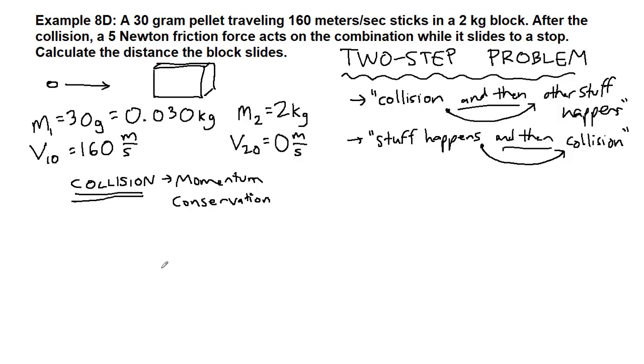But what we will find, and what I will show us on this example problem, is that it's going to be quicker and easier to use our newer chapter seven ideas for the stuff that happens. So collision chapter eight, other stuff happens chapter seven. Stuff happens chapter seven and then collision chapter eight. We will see examples of each of these two-step problem types. But back to what we have now determined is going to be step one out of two, which is the collision, so we will use our standard collision equation.